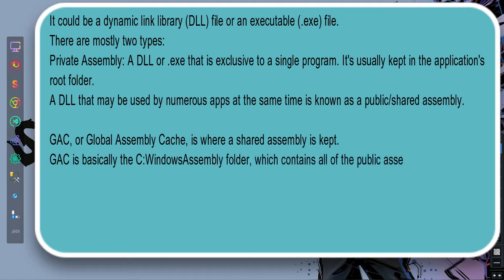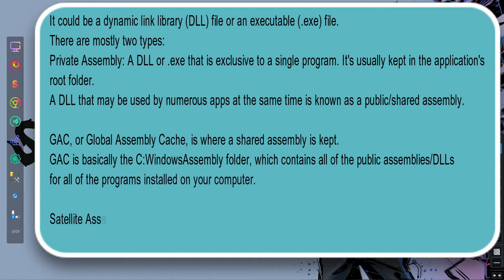GAC is basically the C:\Windows\assembly folder, which contains all of the public assembly's DLLs for all of the programs installed on your computer.